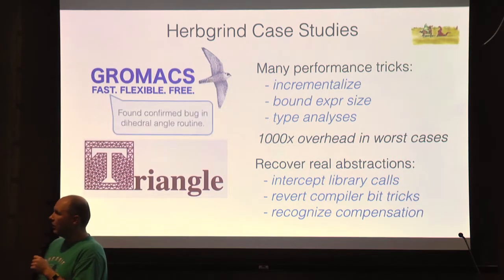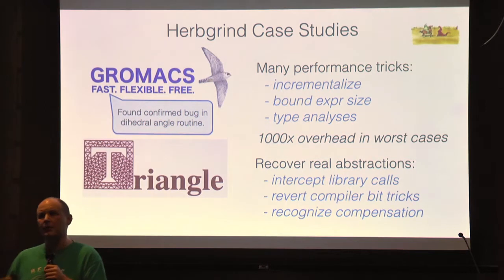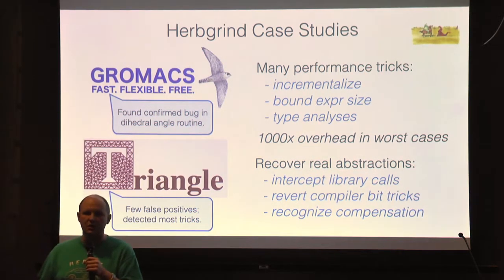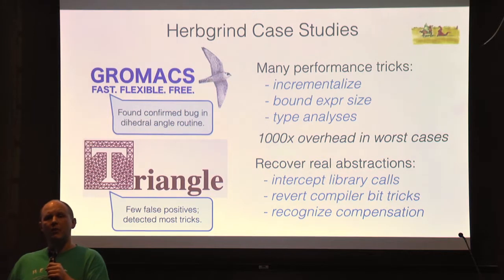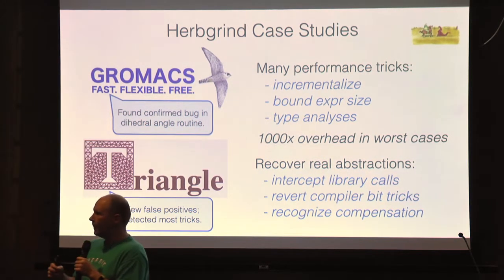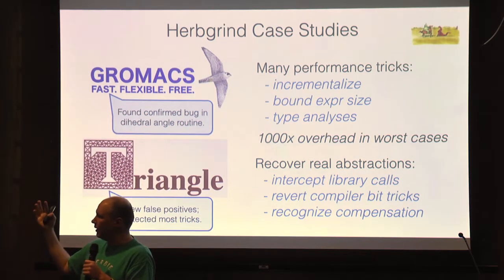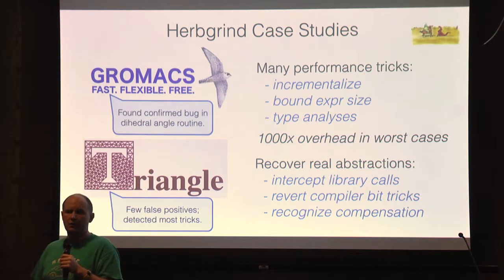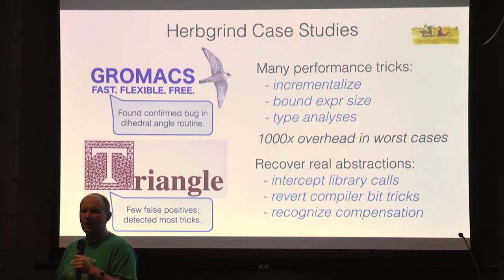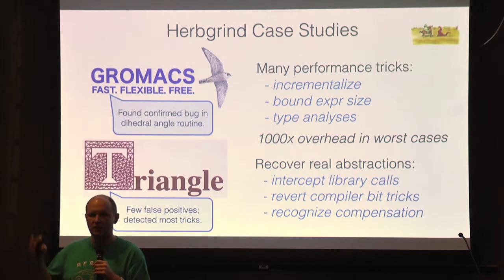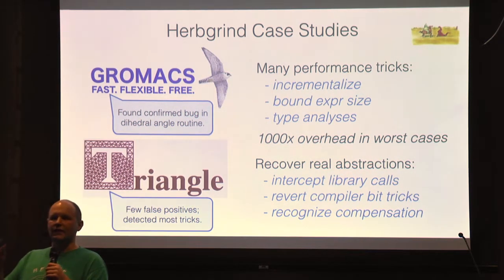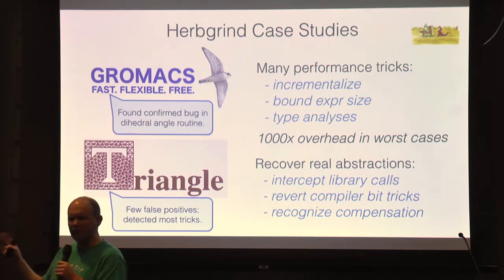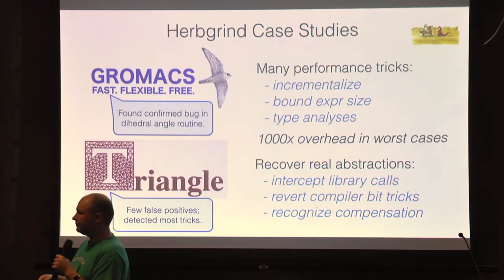In two case studies: we looked at GROMACS and actually identified a bug in the dihedral angle computation, which has since been patched. We also looked at Jonathan Shuchuk's Triangle implementation as an example of expert-written code with handcrafted compensations. Our mitigation of identifying these expert compensation tricks reduced the false positive rate by 95% — at the end we had only four or five false positives for all of Triangle.